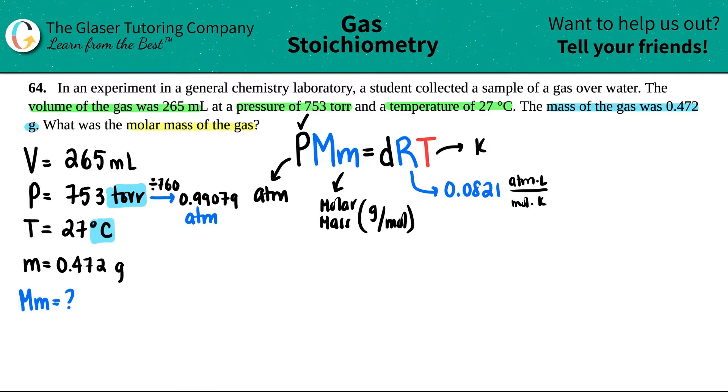We've got to convert to Kelvin. How do we do that? Plus 273. So 27 plus 273 equals 300, so I got 300 Kelvin.